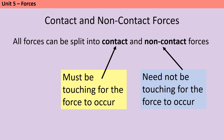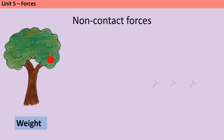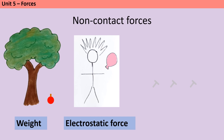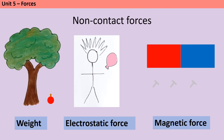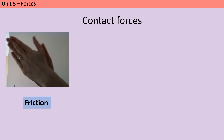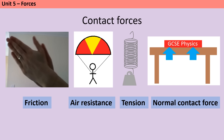You still have a weight which is caused by gravity even if you jump out of a plane, so weight is a non-contact force. In addition to weight, other non-contact forces include electrostatic forces which occur between charged objects and magnetic force which allows magnets to attract materials that are made of iron, cobalt and nickel. The four contact forces you should be able to name are friction, air resistance, tension and normal contact force.